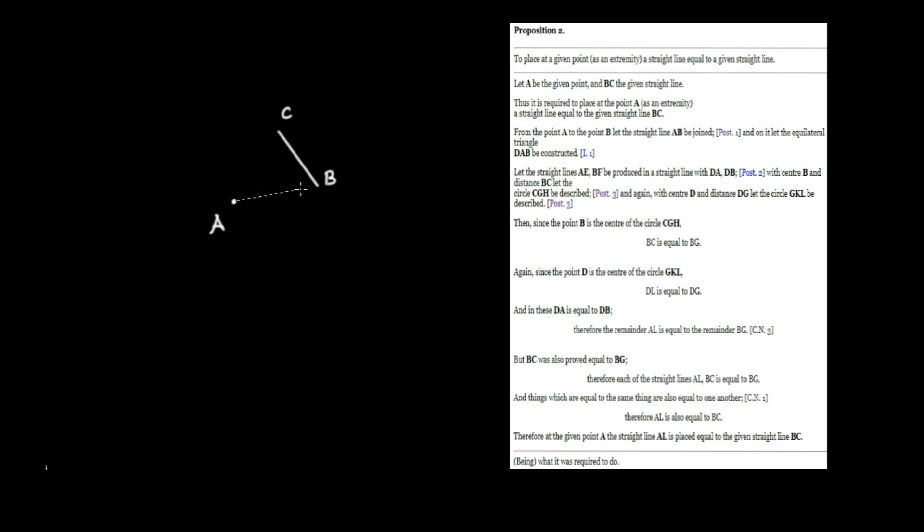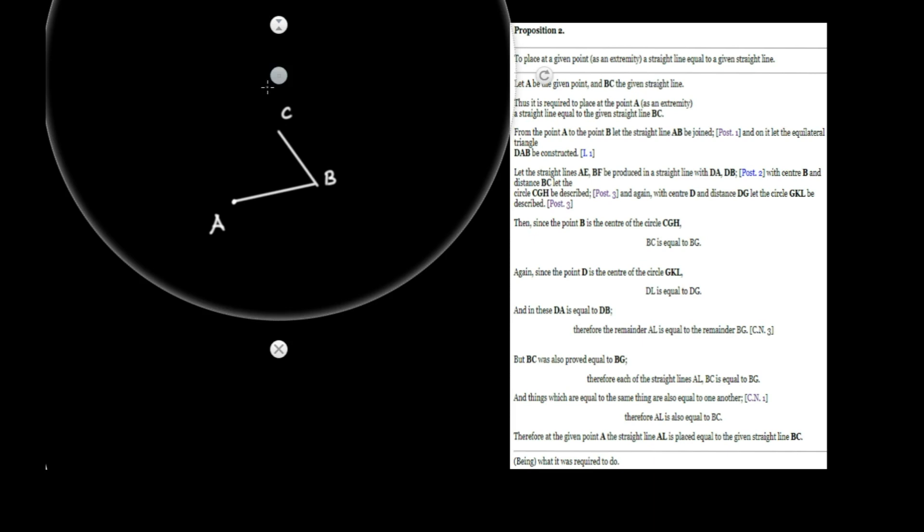The first part of the construction: from the point A to the point B, let the straight line AB be joined, which we can do through the first postulate — so we just connect those two points, A over to B. Upon it, let the equilateral triangle DAB be constructed, which we can do through the previous proposition that we proved.